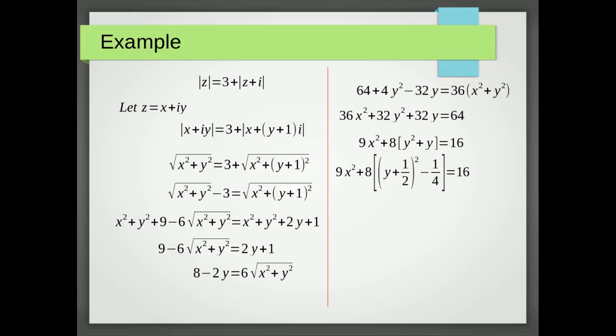But effectively, we just put y and then we put plus because it was plus y, a half because it's half the number of y's that we had, all squared. And then we take away that half squared.